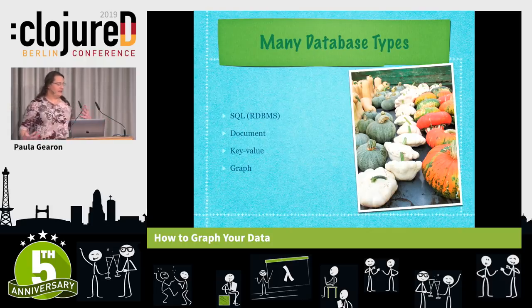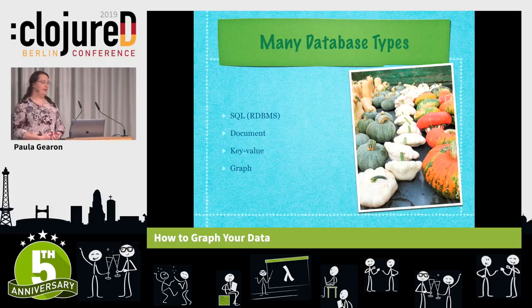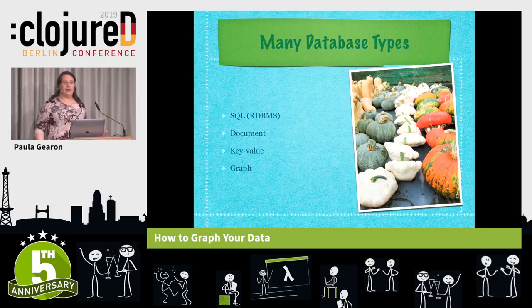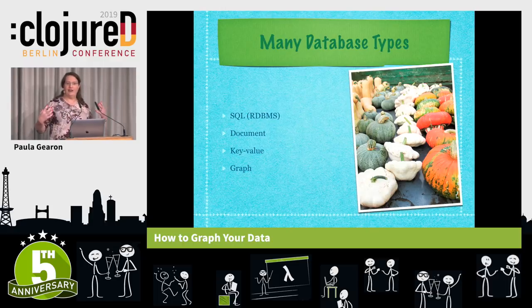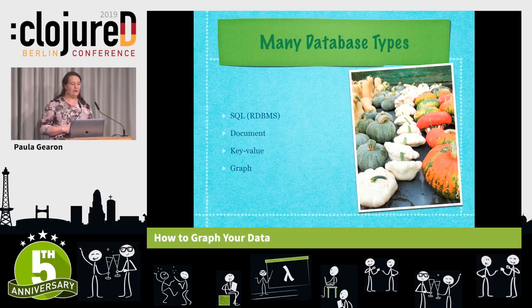There are lots of different database types. The most common out there are the relational databases, which we often call SQL. Then we've got the other styles which typically get lumped into the NoSQL categories. We have document-style databases, we have key-value stores, and we have graph databases.